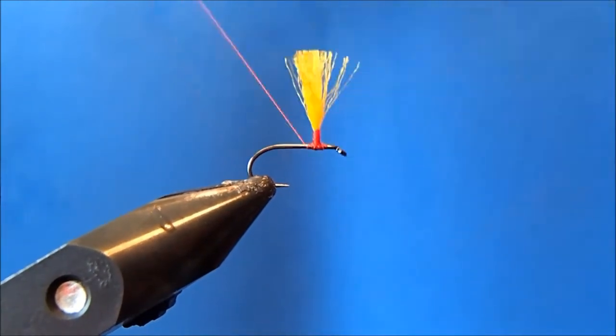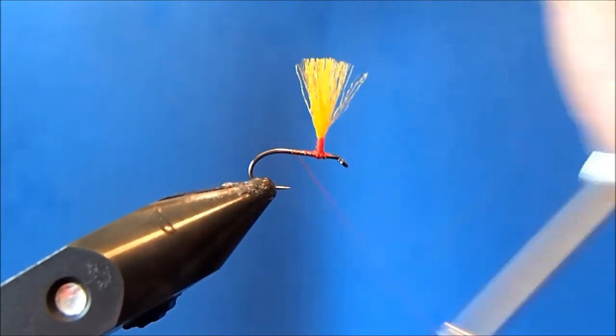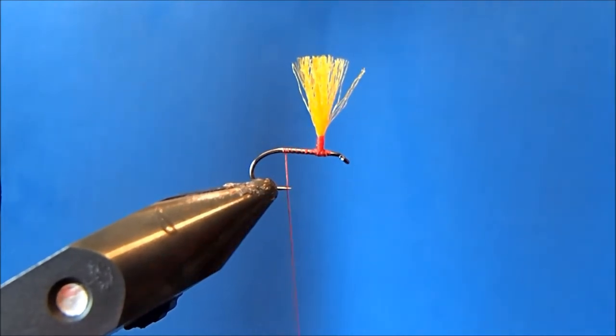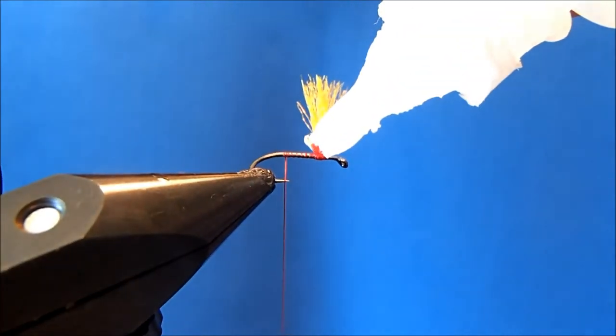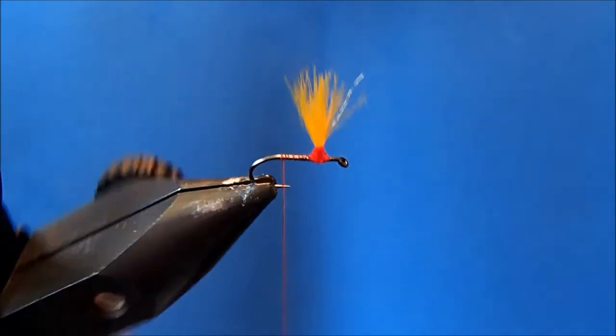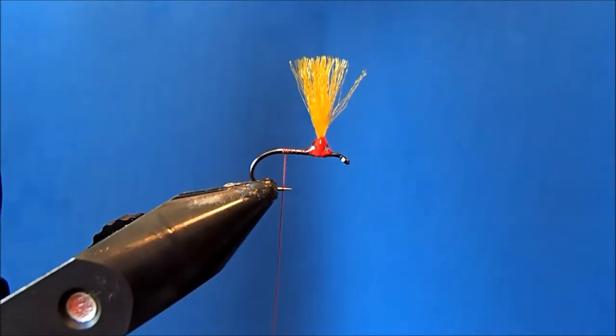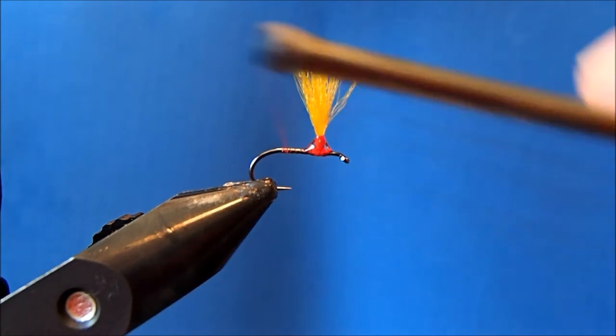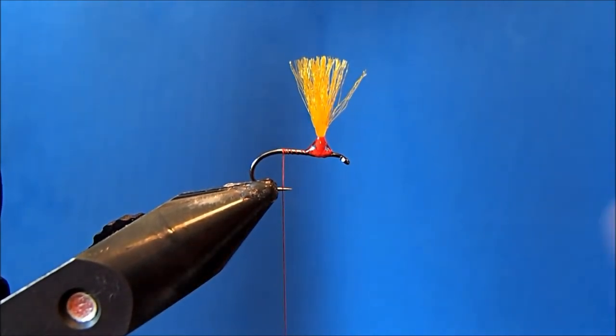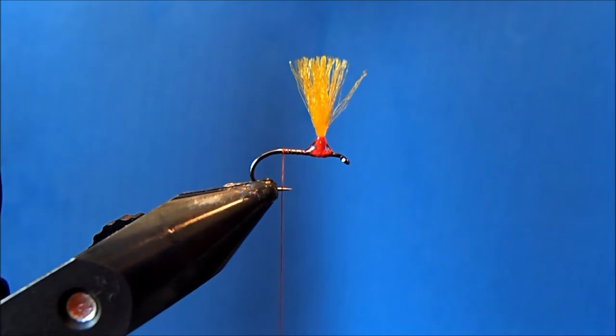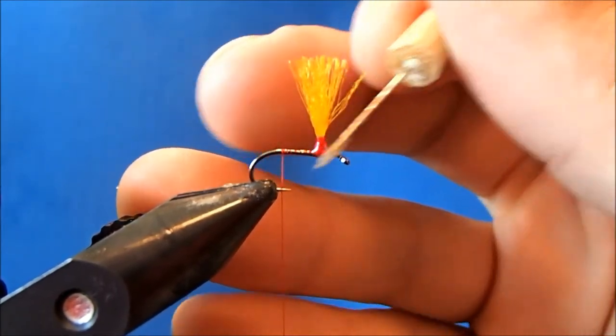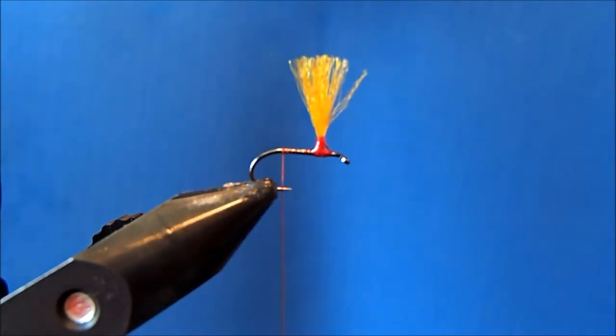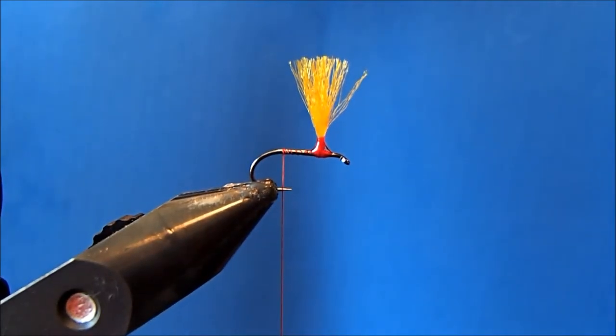One thing that I like to do with most of my patterns that are going to have a post is advance the thread down to the point of the hook and just put a small drop of zap-a-gap on here, or if you want to use head cement. That just makes it real stiff when you want to start applying your hackle to it. I'll take my bodkin and smooth that out. With zap-a-gap, typically less is more.